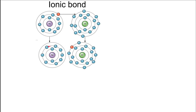Wherever you have a positively charged ion near a negatively charged ion, one will attract the other — positive attracts negative. These two stick together as a result of these charges, and when that happens, we say that an ionic bond has formed.